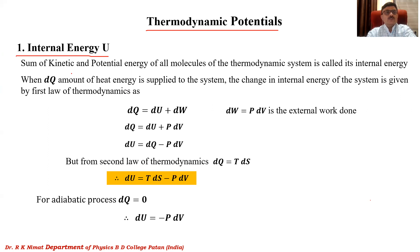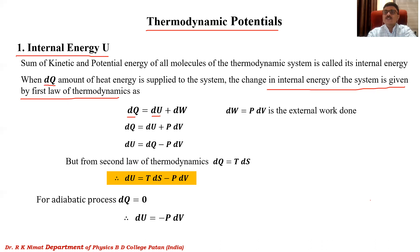Now, if a small amount of heat energy dQ is supplied to the thermodynamic system, there occurs a change in internal energy. By the first law of thermodynamics — the law of conservation of energy — if dQ is given to the system, part of it changes the internal energy and the remaining part performs external work. External work done is P dV. So we can write dQ = dU + P dV, or dU = dQ − P dV.